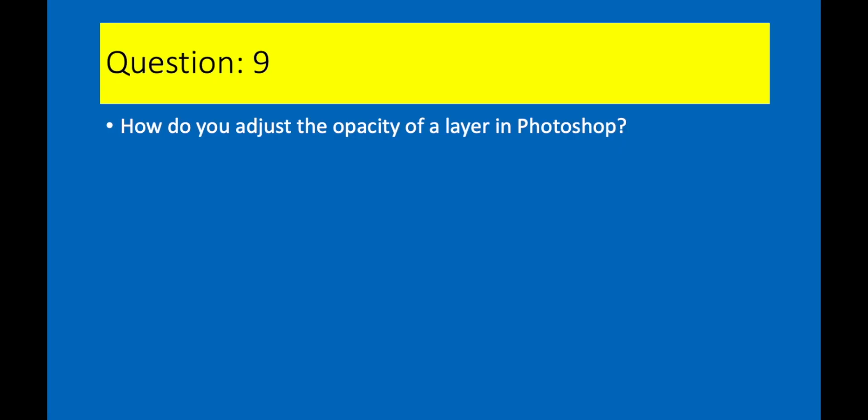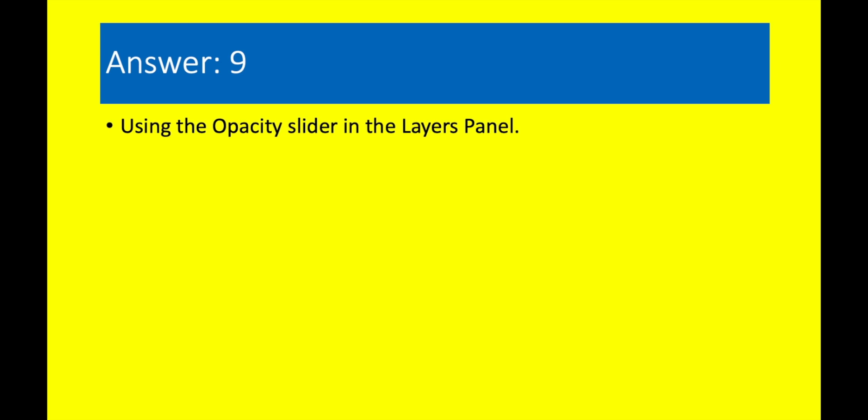Question 9. How do you adjust the opacity of a layer in Photoshop? Answer 9. Using the opacity slider in the layers panel.